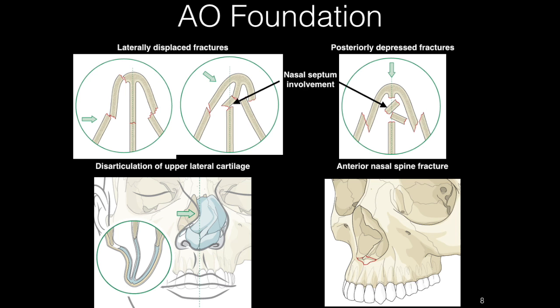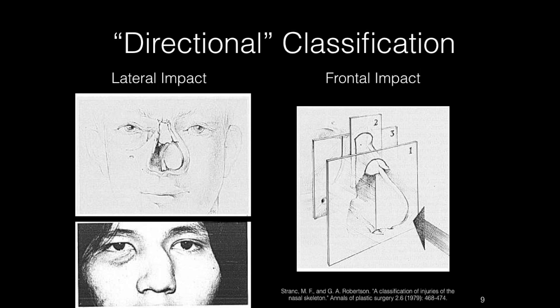Anterior nasal spine fractures can occur in isolation or in association with other nasal fractures. Displaced fractures are often associated with nasal septum dislocations and fractures, and can occur in association with degloving injuries of the upper labial vestibule, as in a steering wheel injury. Isolated anterior nasal spine fractures do not usually require treatment. The other broad method of categorization is based on the direction of the impact force, first described by Strank and Robertson in 1979. The classification is divided into two main groups — lateral and frontal — with further breakdown of the frontal type into three different planes determined by the depth of injury from the nasal tip.